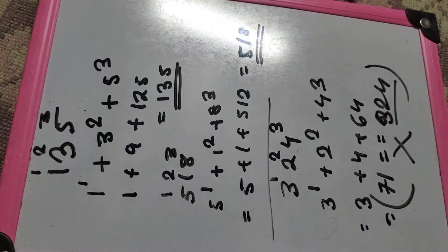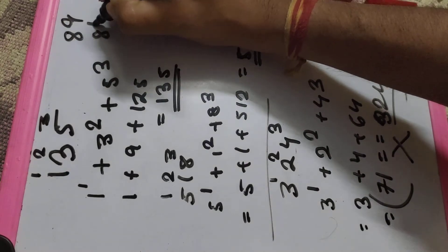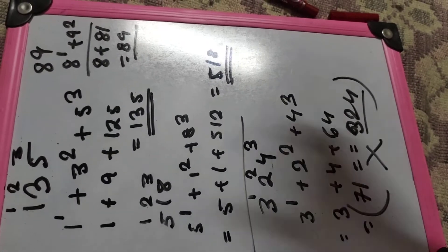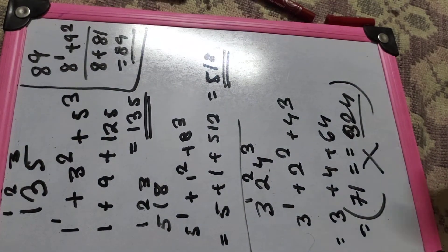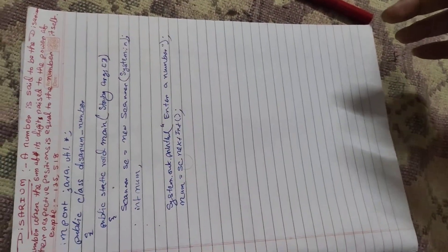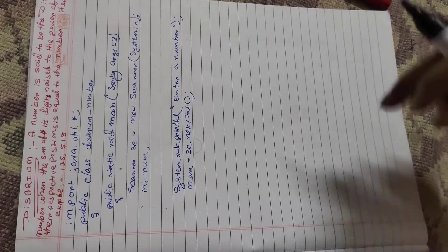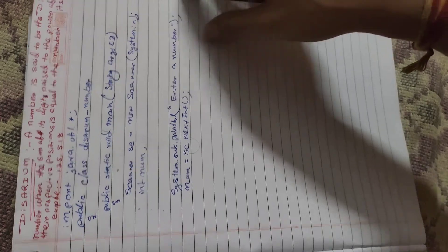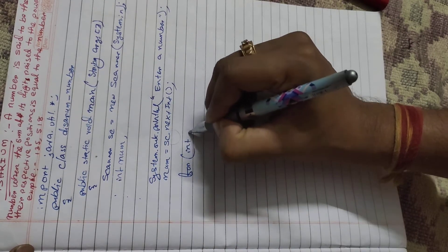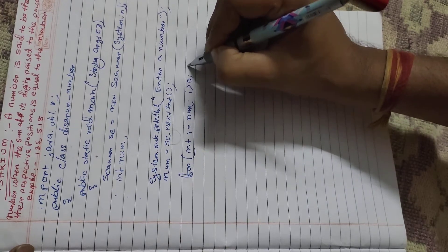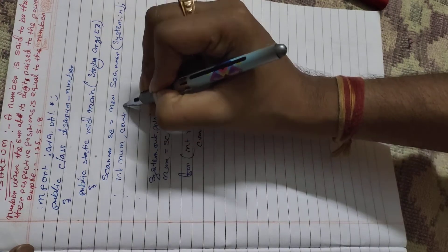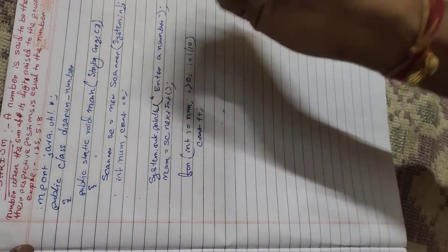We need to know the number of digits. The number could be 2 digits like 89 — where 8 to the power 1 plus 9 to the power 2 equals 8 plus 81 equals 89, also a Disarium number. It can be 2, 3, or more digits. So we use a count variable and a for loop: for(int i = num; i > 0; i = i / 10), with count++ inside, to count the number of digits.